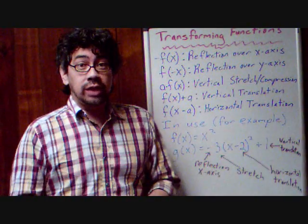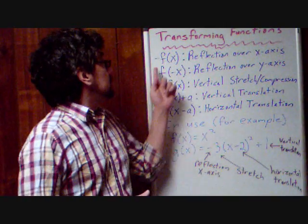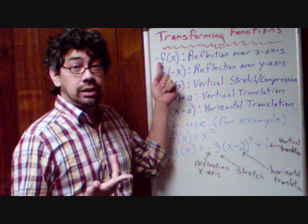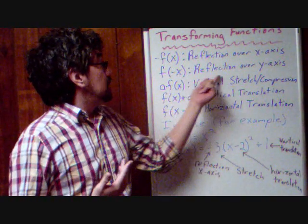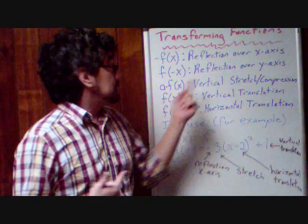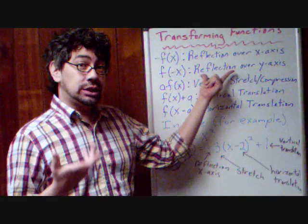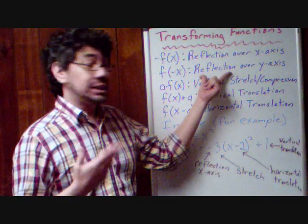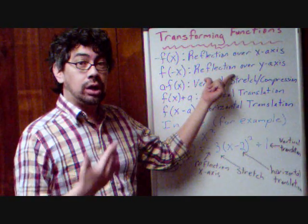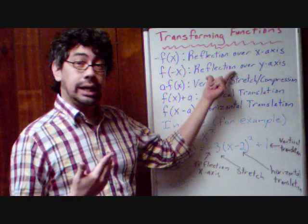We're going to be dealing with reflections over the x-axis. This happens when we put a negative in front of the function. Reflection over the y-axis when we put a negative inside the function. Now in this first section we're dealing with transformations, we're actually not going to see this, but we are going to see it later, so I want to go ahead and prepare you for that.